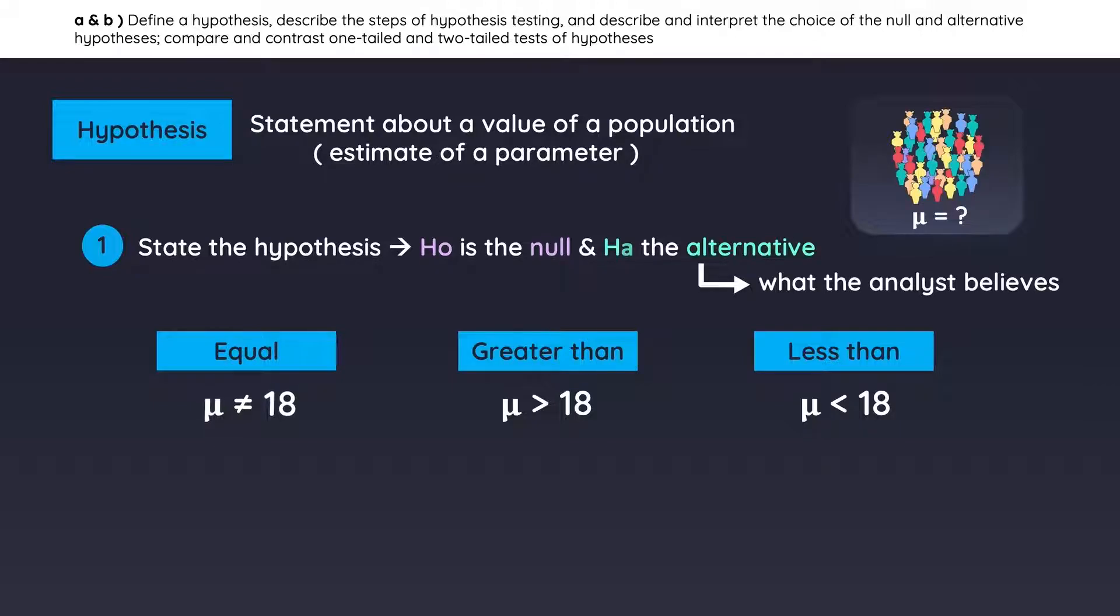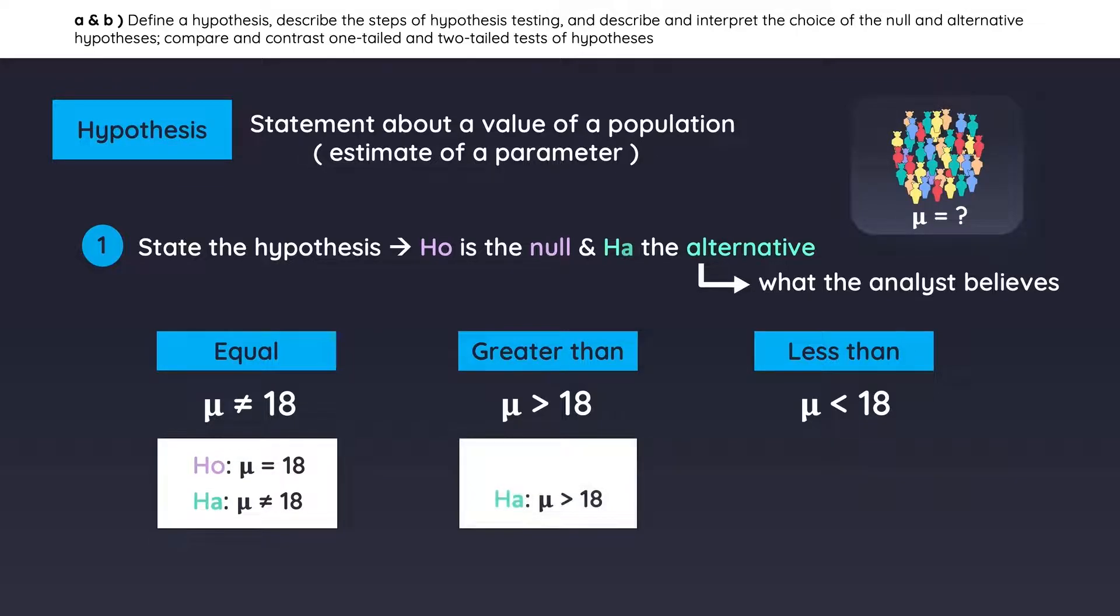So, if analyst one believes the mean is not equal to 18, that is the alternative and the null will be the opposite. Analyst two believes the mean is greater than 18, so the null is the opposite. We do the same for analyst three.